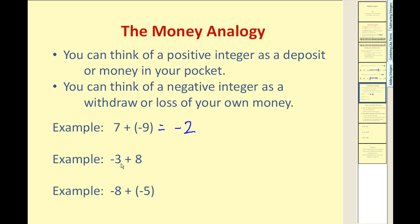Negative three plus eight. You lose three dollars. But then you win eight dollars. Well, if you lose three dollars and then you win eight dollars, you'll still be ahead five dollars. So it's positive five. Negative three plus eight equals five.